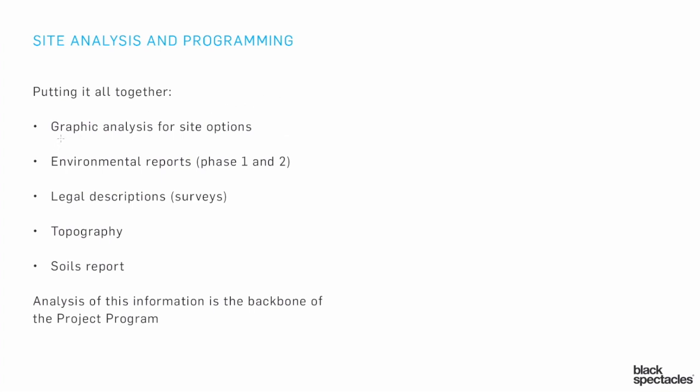For example, we talked earlier about doing a graphic analysis for the different site options. That's where you've got your building and you're starting to understand the orientation of the sun — looking at issues about wind direction and what those might mean. Is it important to worry about? Do we need to block it or do we want to accept it? We have that graphic analysis so we can understand what those issues really are.